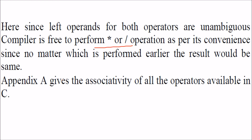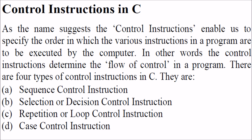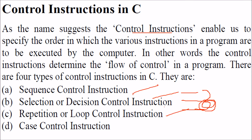Control instructions in C decide the flow of control - which statement is executed, when it is executed, or whether an expression has to be executed repeatedly. The types are: sequence control instruction, selection or decision control instruction, repetition or loop control instruction, and case control instruction.